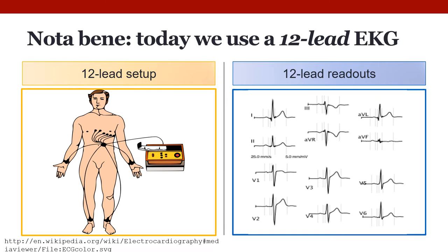Today we don't even use a three-lead EKG anymore — we use a 12-lead EKG. There are six electrodes arranged in some pattern around the heart, and then four reference electrodes are put on the wrists and ankles. When I had my EKG, these were moved up onto the torso to be closer to the heart, but they still had 10 stickers and we still got 12 readouts. Lead two still looks about like the standard EKG that we're about to learn about.